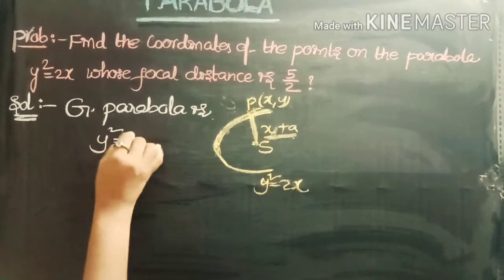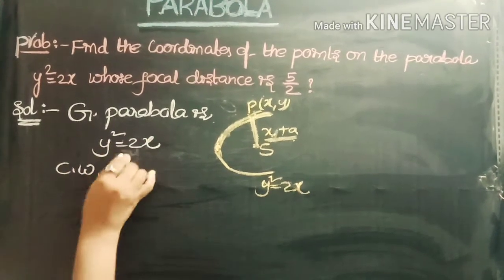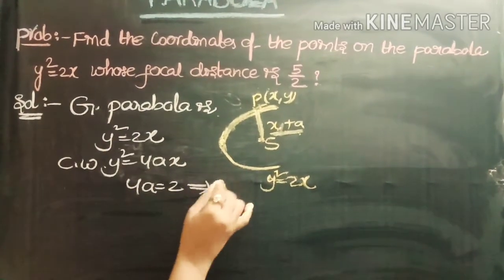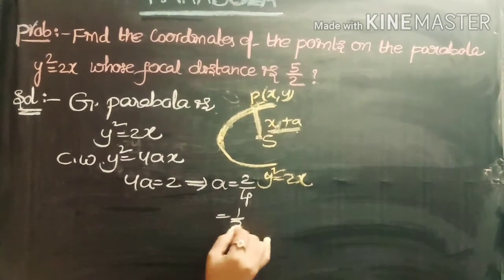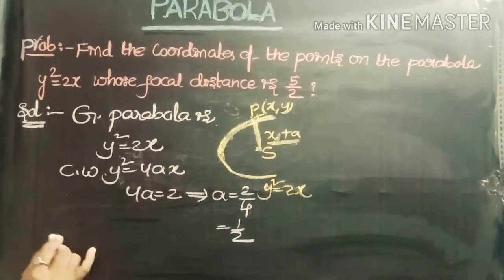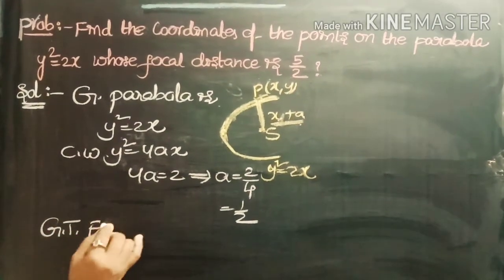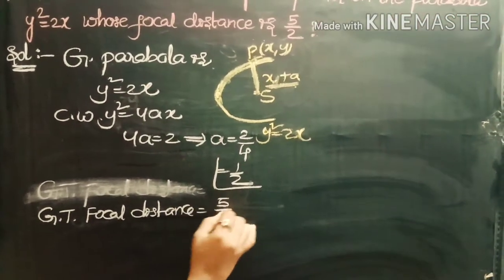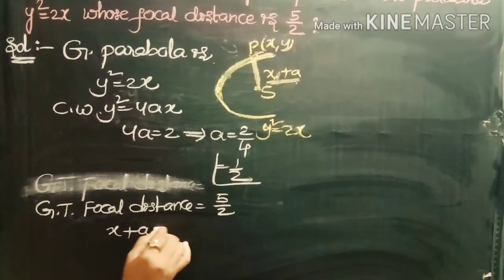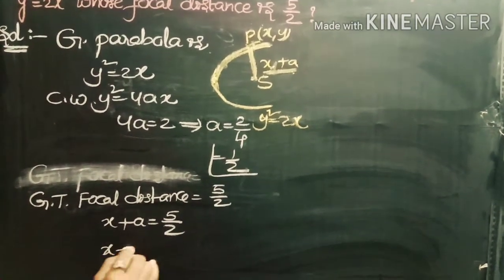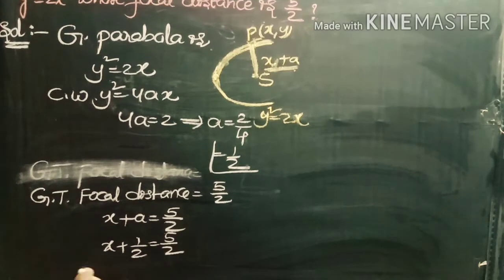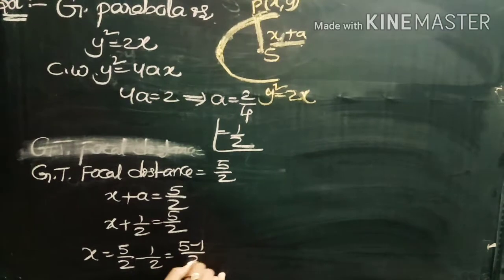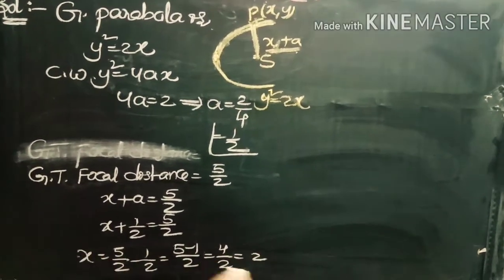Comparing the given parabola y² = 2x with the standard form y² = 4ax, we get 4a = 2, so a = 1/2. Using the focal distance formula x + a = 5/2, we substitute a = 1/2: x + 1/2 = 5/2, giving x = 5/2 − 1/2 = 4/2 = 2. So x = 2.